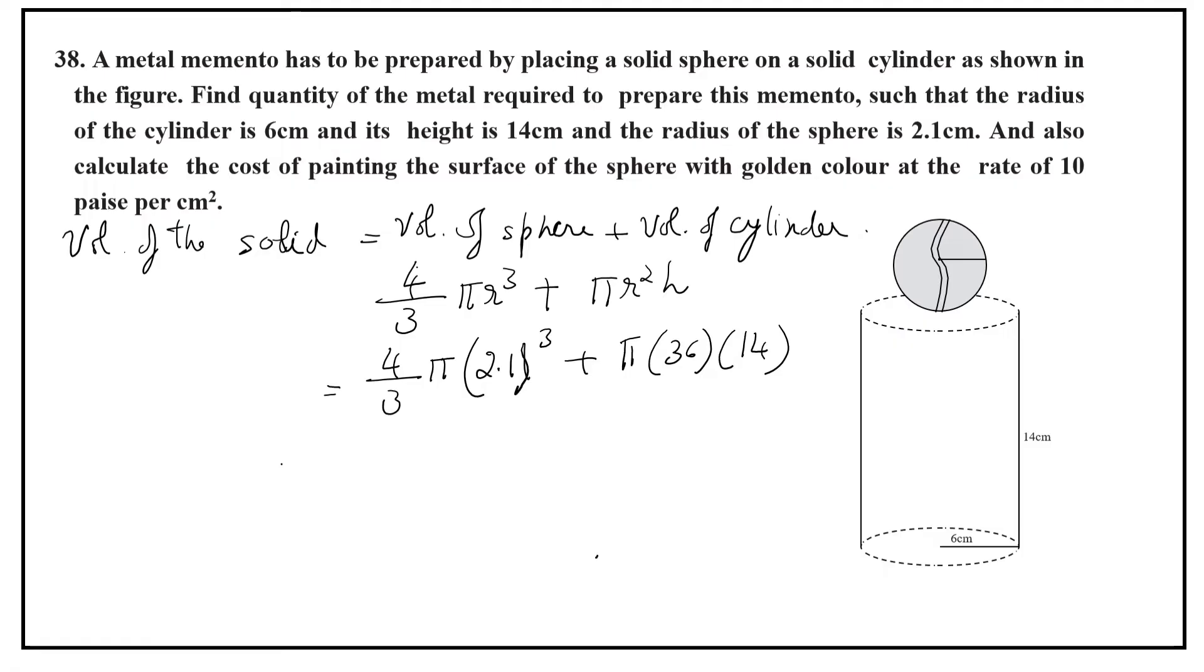Now let us do a trick, otherwise it will be a huge problem. Let us take here 4. Let us take common thing outside. Then pi, 4 pi is outside now, 2.1 into 2.1 into 2.1 by 3 plus, here 4 has been taken out, so 9 into 14. Let us convert now only.